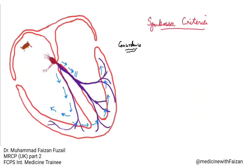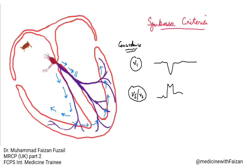To put it simply, concordance on ECG means both the QRS and ST-T changes are in the same direction. So in left bundle branch block, concordance would mean in V1 there is a negative QRS complex along with ST depression — instead of the discordant ST elevation normally seen in left bundle branch block. And in V6, concordance would mean there is ST elevation along with a positive QRS, instead of the discordant ST depression normally seen in left bundle branch block.